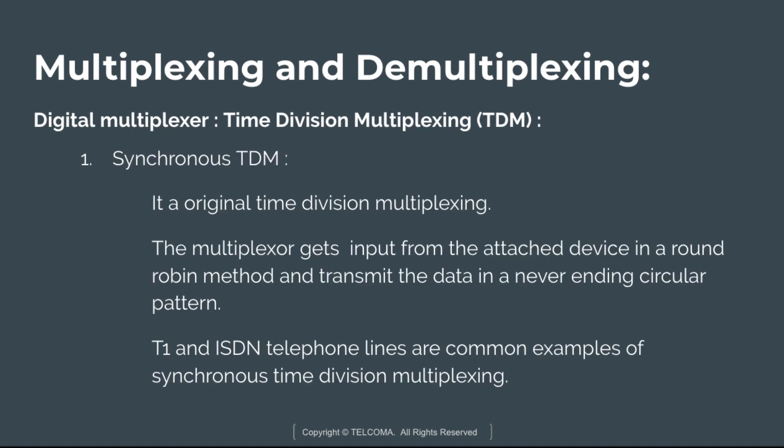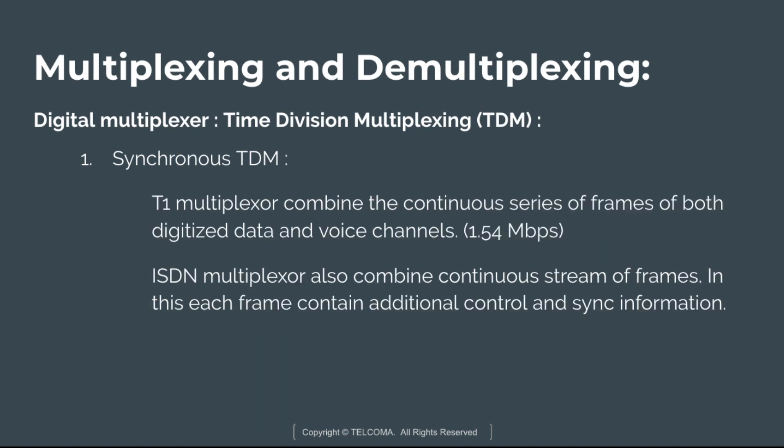Synchronous TDM is the original form of TDM. The multiplexer gets input from attached devices in a round-robin method and transmits data in a continuous circular pattern. Time slices are assigned to each process in equal portions and in circular order, handling all processes without priority. T1 and ISDN telephone lines are common examples. A T1 multiplexer combines a continuous series of frames of digitized data and voice channels, sending at 1.544 Mbps.